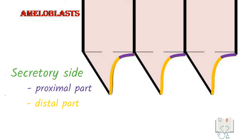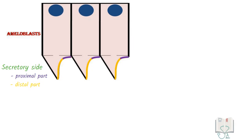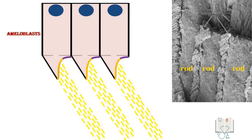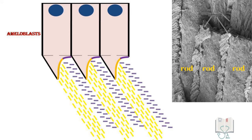These two surfaces release hydroxyapatite crystals at different angles. The distal part produces crystals parallel to the long axis of the enamel rod, thus forming the rod. Whereas the proximal part produces crystals at an angle of 65 degrees, thus forming the inter rod.